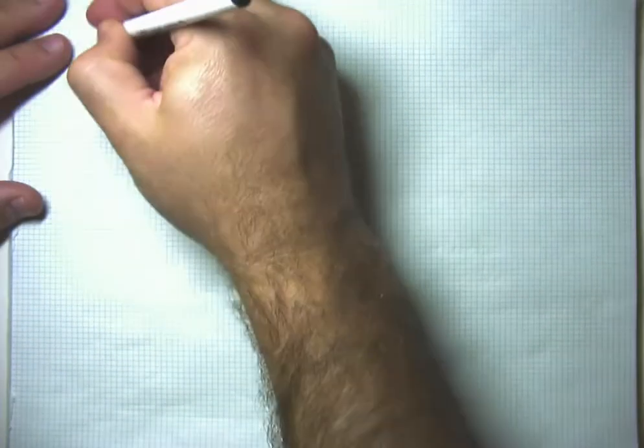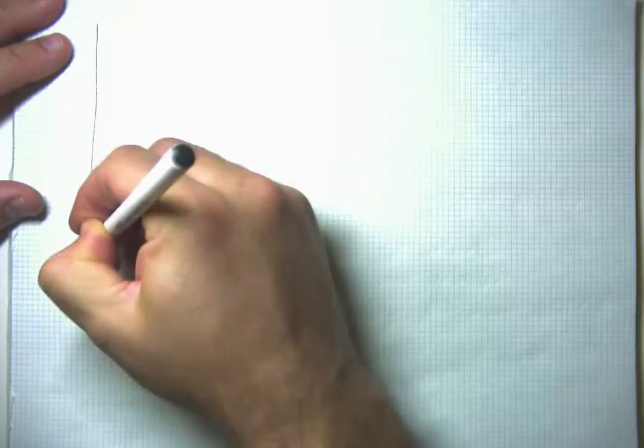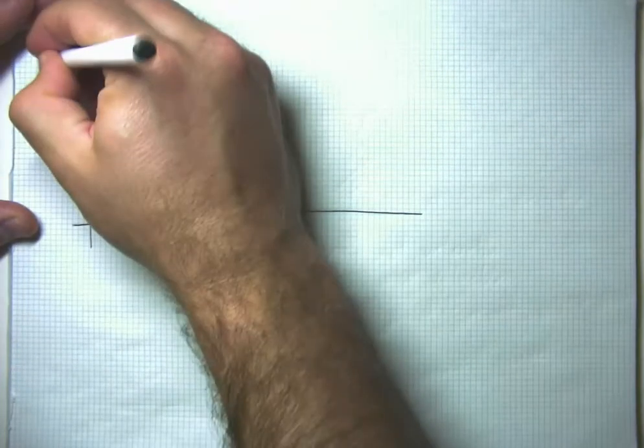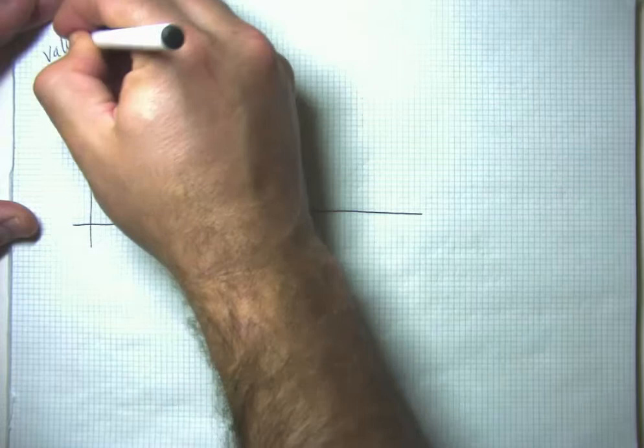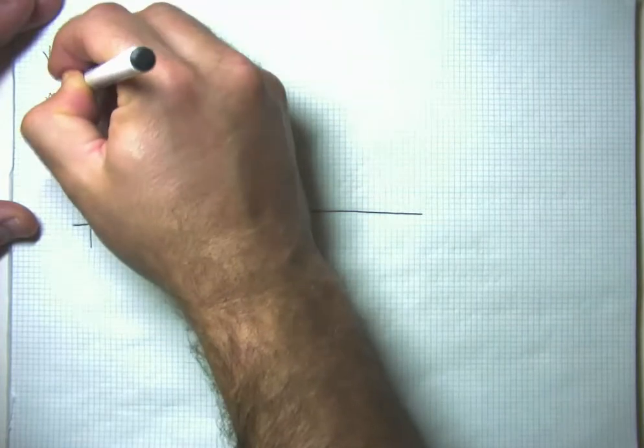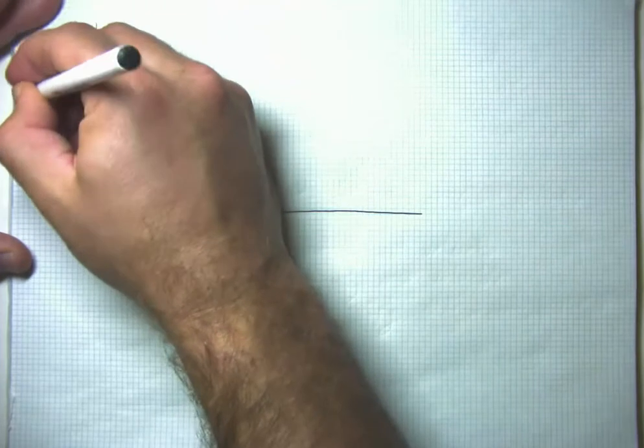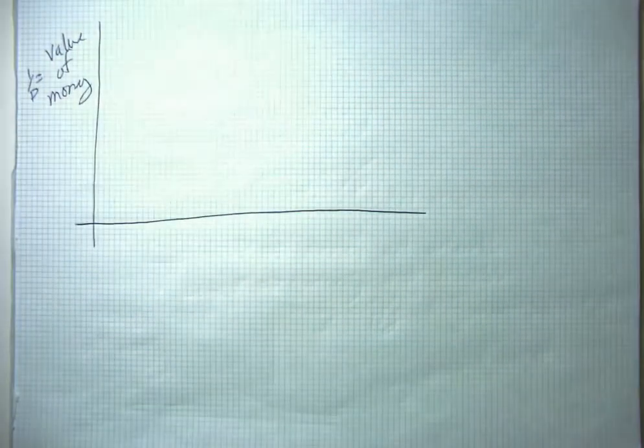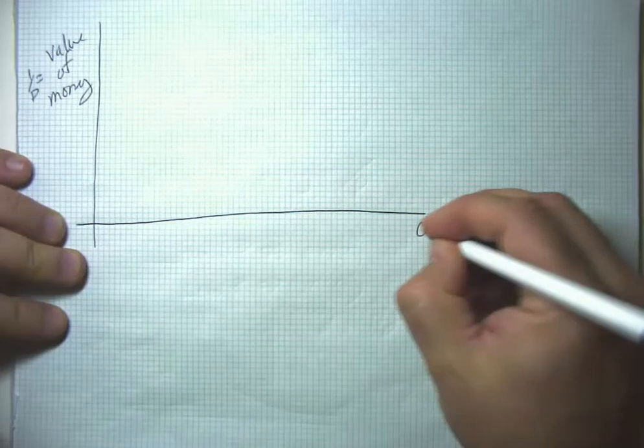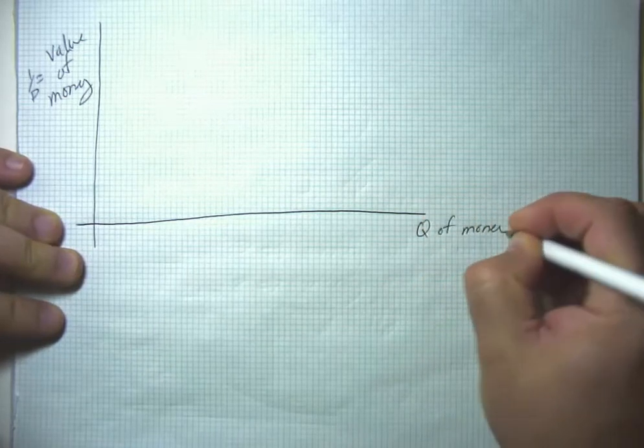So I'll draw a nice and big now. So we have value of money on this axis, and we know that equals one over the price level. And we have quantity of money on the horizontal axis.